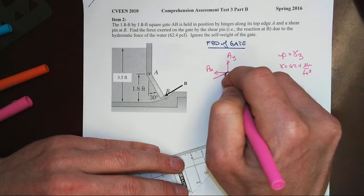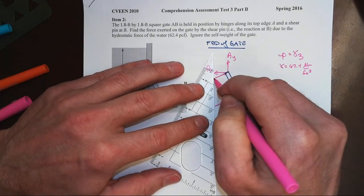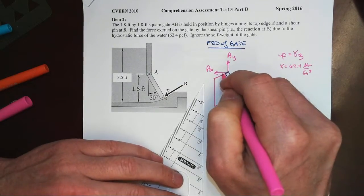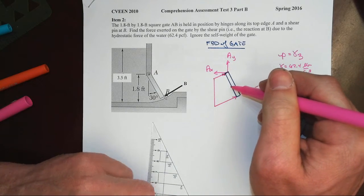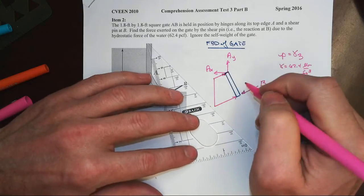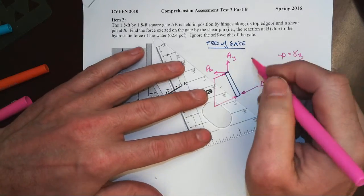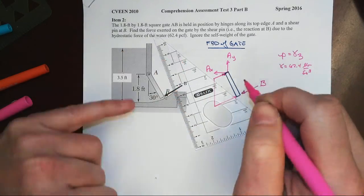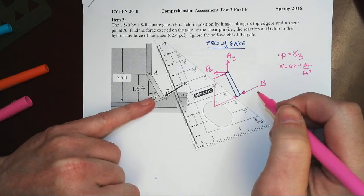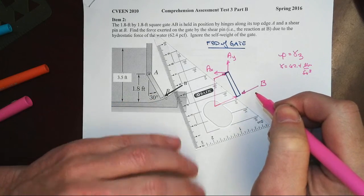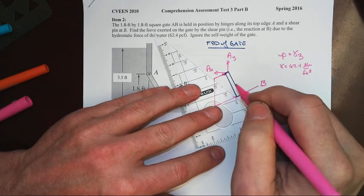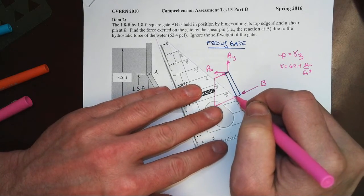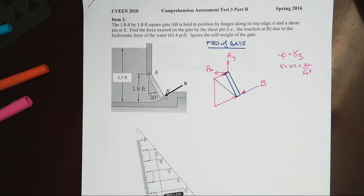The other part of this is that it's going to vary linearly here with depth, and that means that the effective force distribution on the gate is going to be ultimately trapezoidal in nature. It's going to be acting at 30 degrees relative to something here, and since the gate is rotated 30 degrees, it's normal to the gate, so therefore there's a 30 degree orientation.